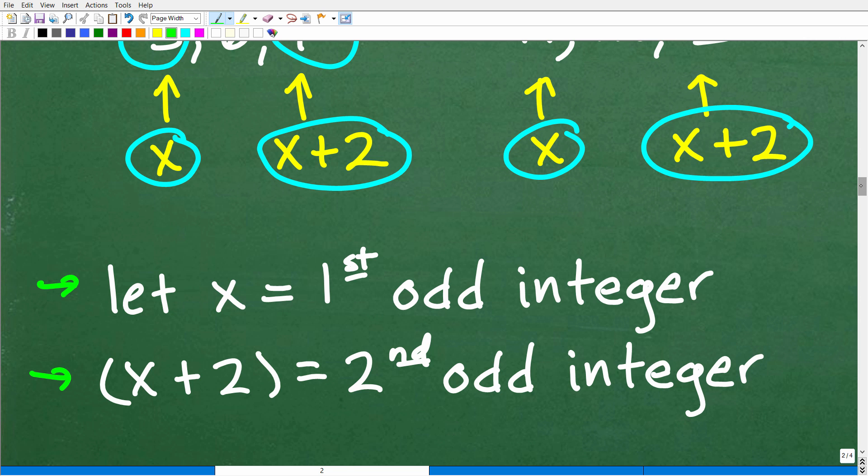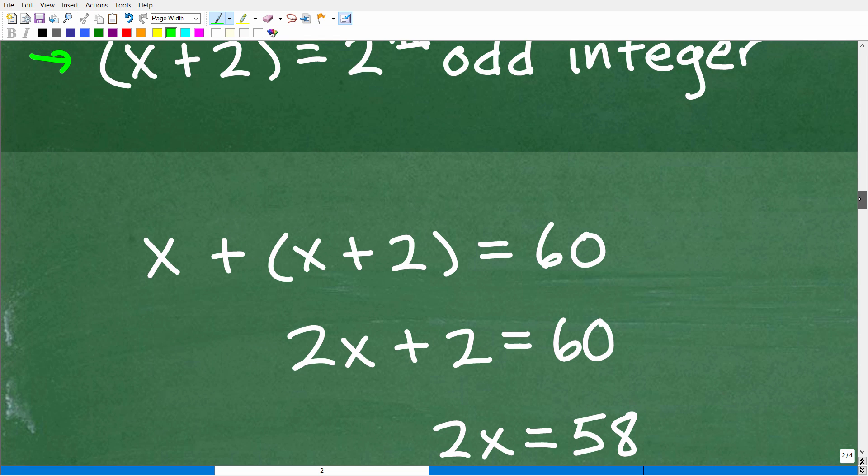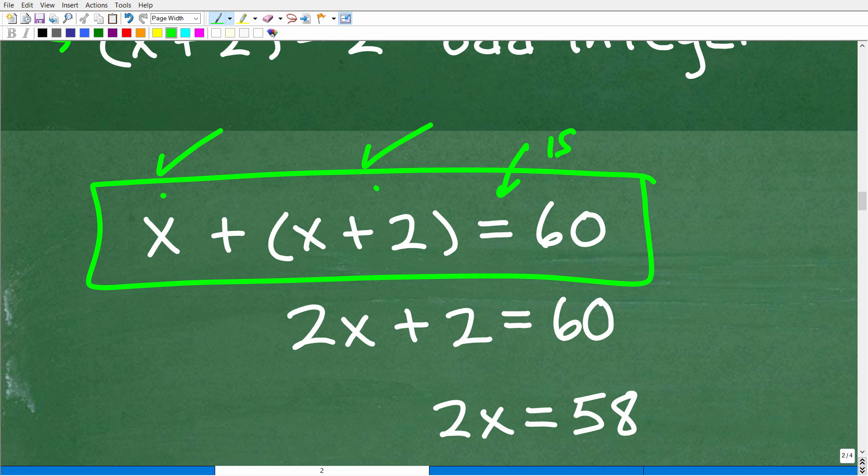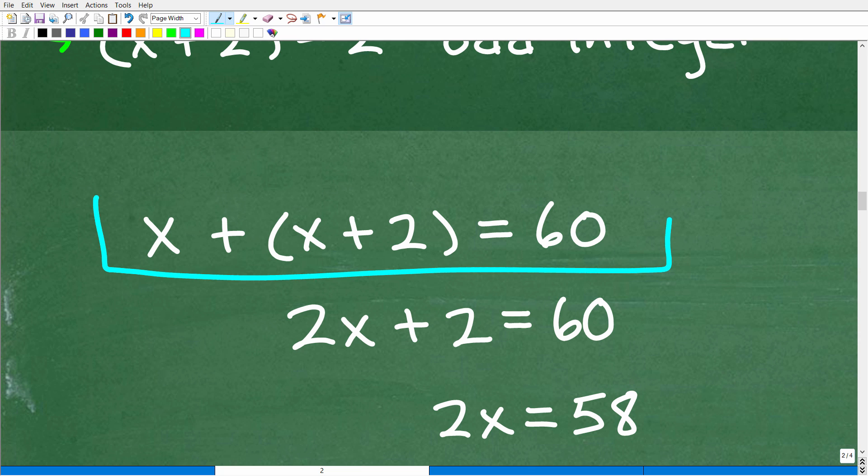But we're going to kind of formalize this so anyone reading our work will be nice and happy with how neat and structured we are. So, we're going to say let X equal the first odd integer, and then X plus 2 equal the second odd integer. Okay. So, now we know that the sum of these two odd integers is 60. So, here is the equation that we want. The sum of two consecutive odd integers, this is the first one, that's the second one, is 60. This is the word is, and here we have 60. So, now really this comes down to your ability to solve a basic linear equation.